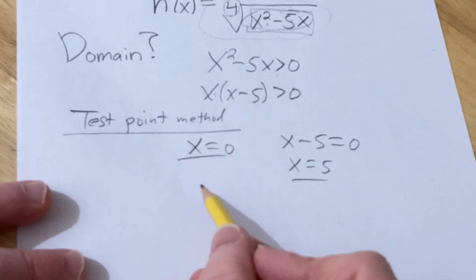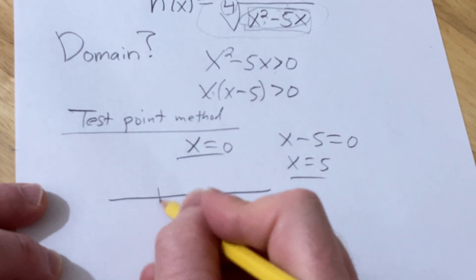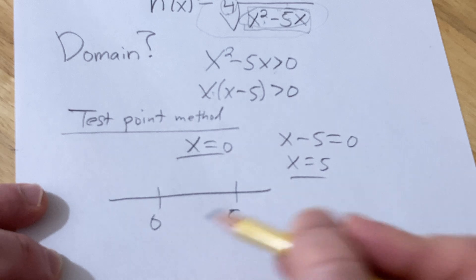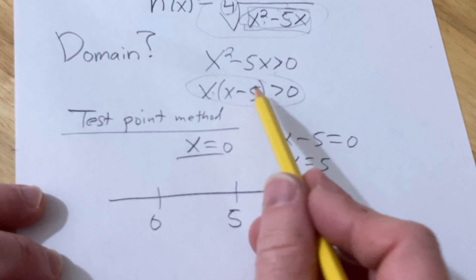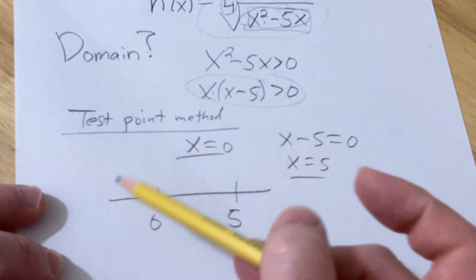Then you take these two numbers and plot them on a number line. You pick test points and plug them into the inequality. If the inequality is true, you shade. If it's not true, you don't shade.